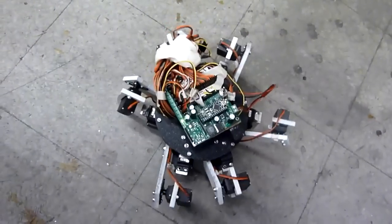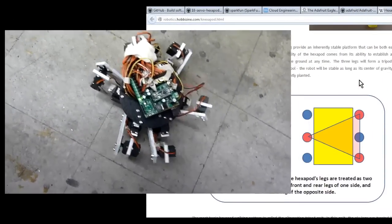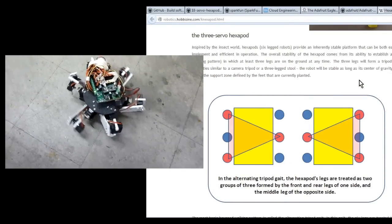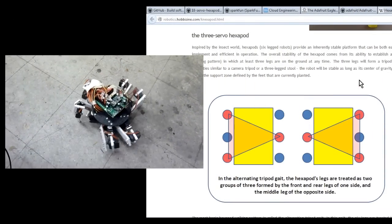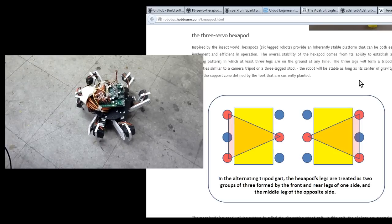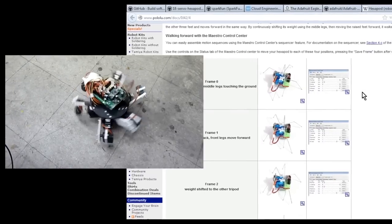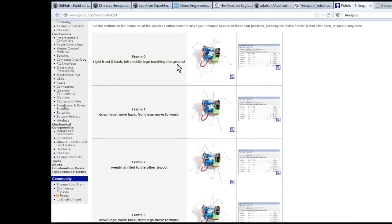The gait it's exhibiting to walk forward and backward is the classic tripod gait. Essentially, for each leg there is an up and down state, as well as a forward and backward state. At any given time, three legs are up and three legs are down, and the three legs in the air move forward, while the three legs on the ground move backward.